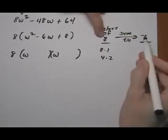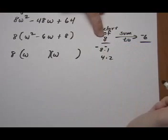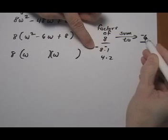This is a positive 8, and we know that they have to add to minus 6. That means both of them are going to need to be negative. Because if you multiply two negatives, you get a positive. If you add two negatives, you get a negative.